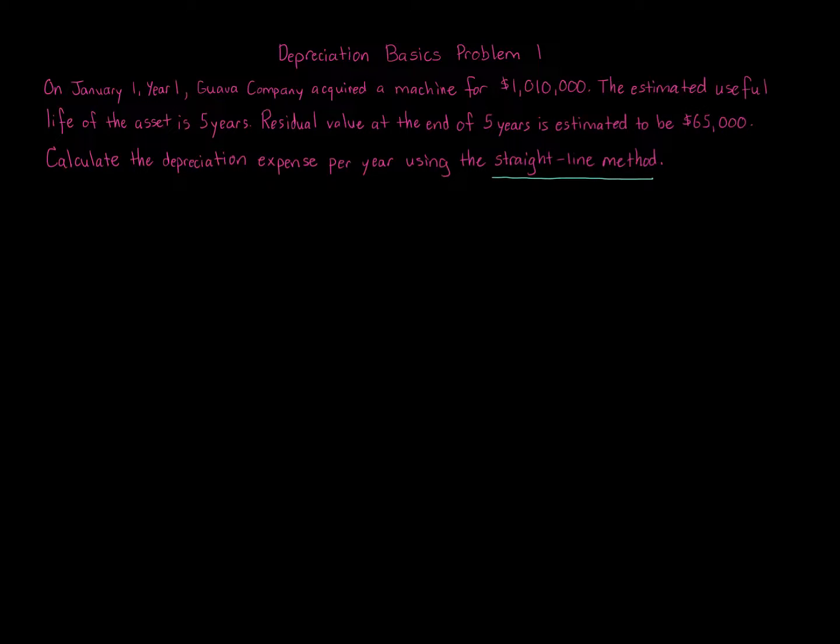The formula for straight-line depreciation: we take the cost of the item minus the residual value, also known as salvage value, which you can think of like scrap value. For example, a car will always have scrap value because of the metal components. So we take cost minus residual value and divide that over the useful life.